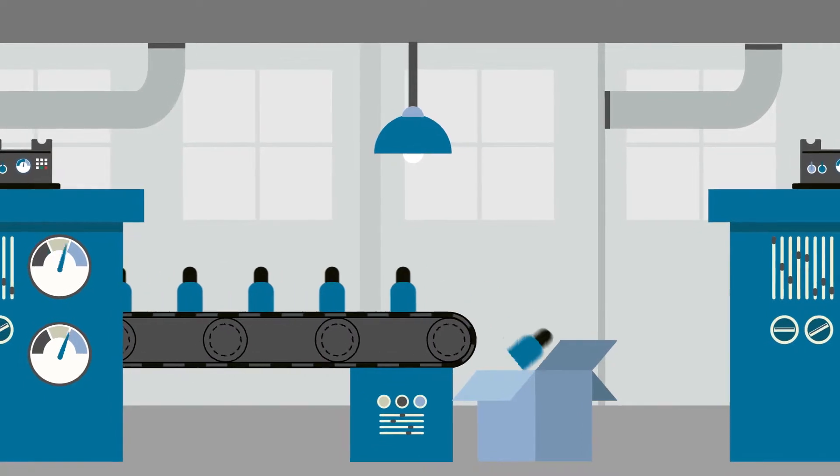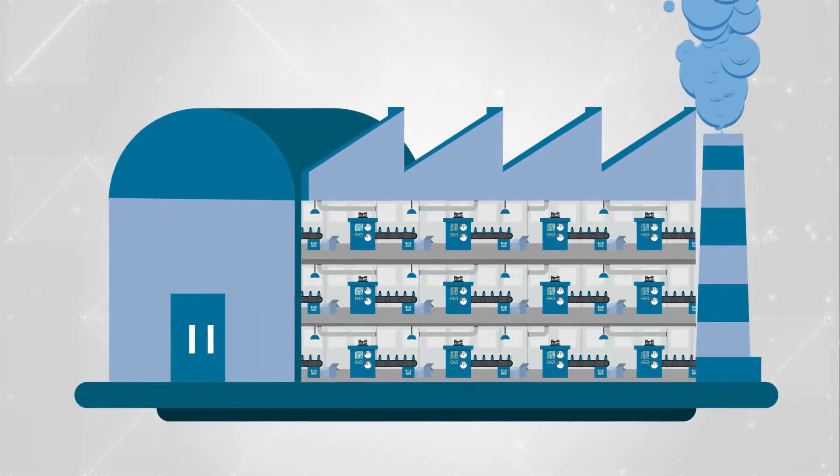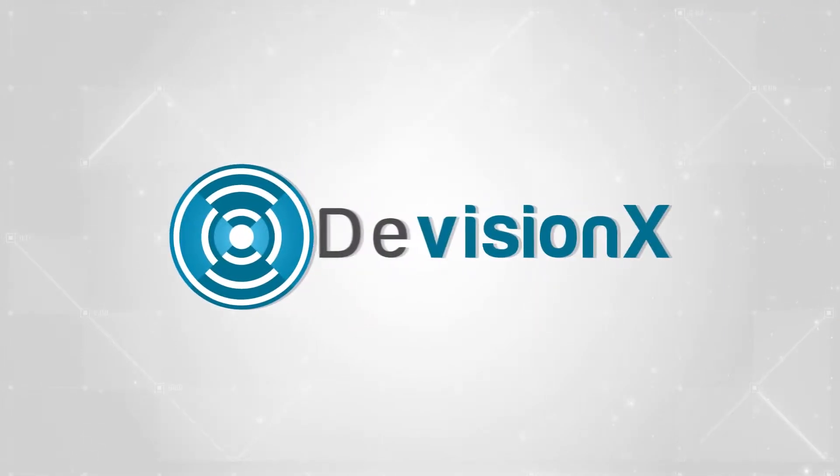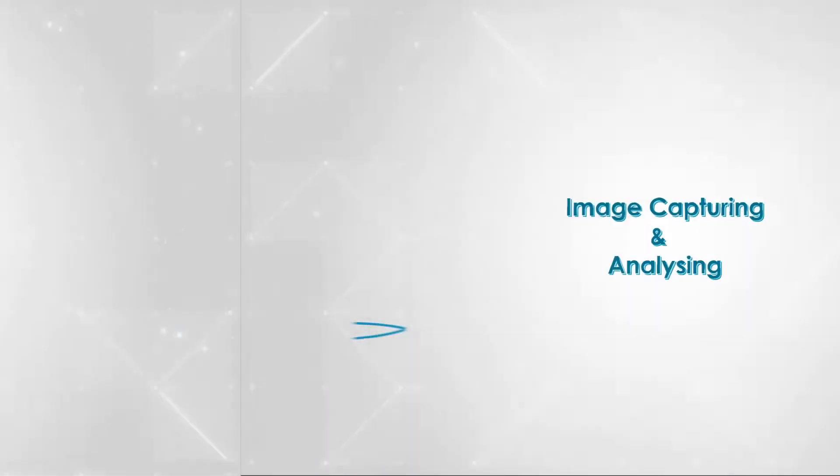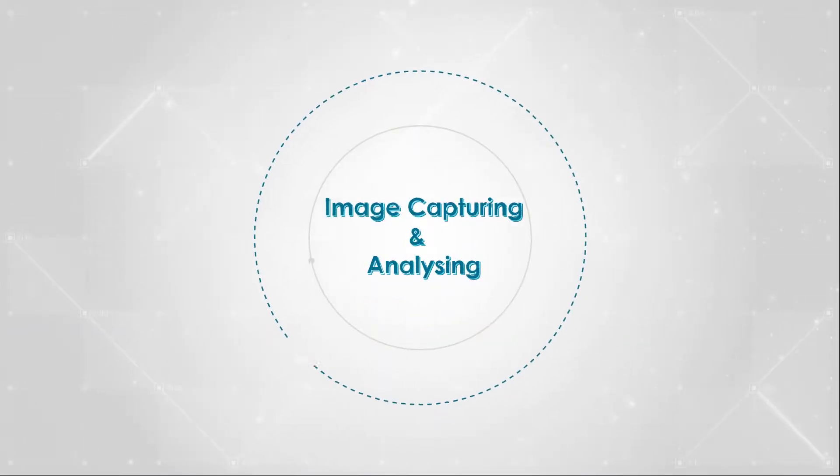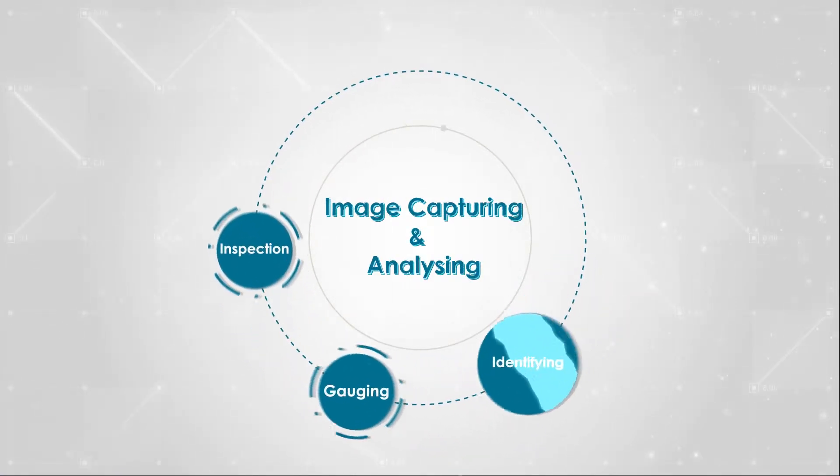To ensure quality and consistency, you need to have an eye on your products and their defects. Division X system uses image capturing and analyzing techniques to automate tasks for you such as inspection, gauging, and identifying.